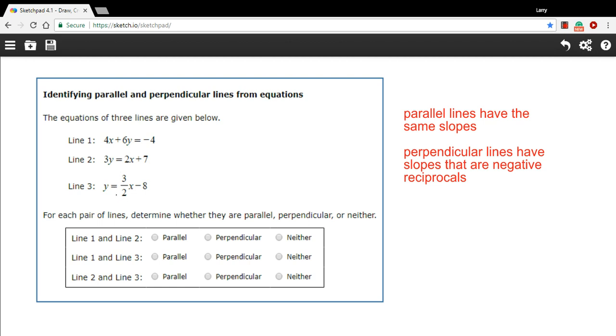In line 3, you can easily see the slope is 3 halves, the number that's multiplied by the x term. So let's go ahead and do that. This one's pretty easy. I'm just going to divide everything by 3 here. So we get y equals 2 thirds x plus 7 thirds.